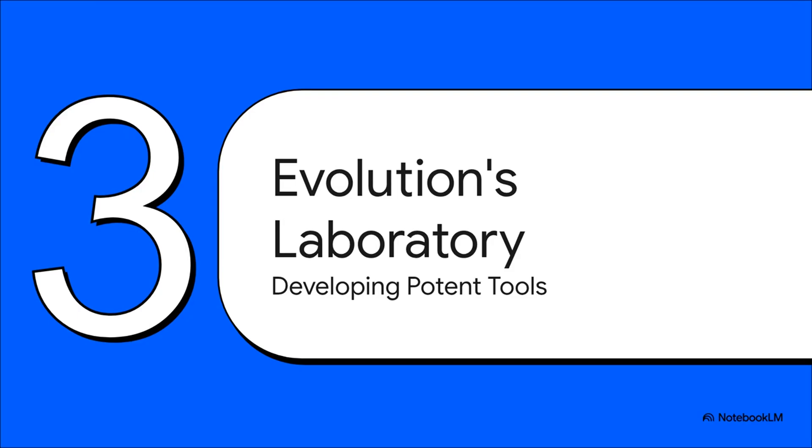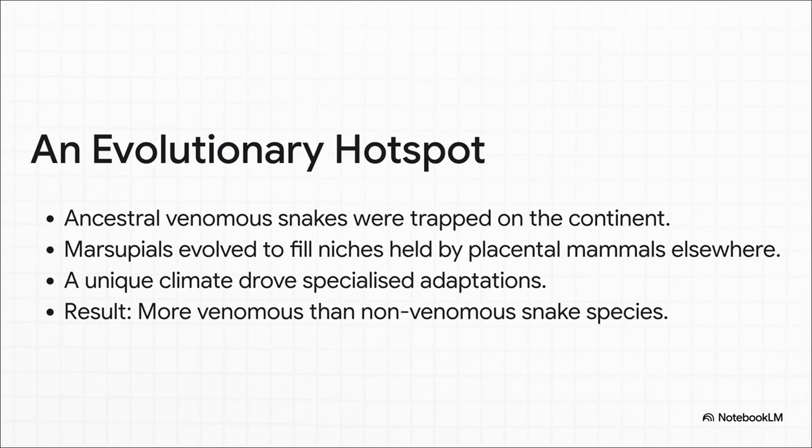In this isolated world, a sort of evolutionary arms race kicked off. With a limited number of species around, the pressure to survive, to eat and avoid being eaten, drove the development of some really extreme tools, especially venom. The ancestors of today's venomous snakes were already there. And since there weren't many placental mammals, unique marsupials like kangaroos and koalas evolved to fill every possible role. All this, plus a harsh climate, led to a pretty wild outcome. Australia is the only continent where venomous snakes actually outnumber non-venomous ones. That intense pressure created some true record breakers.